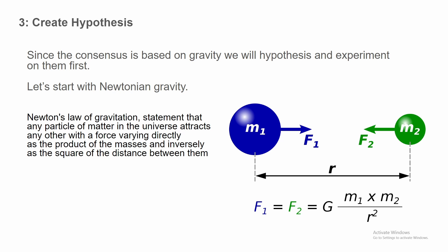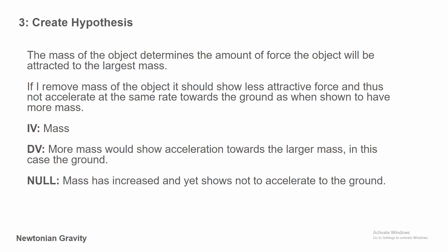Number three: We create the hypothesis. Since the consensus is based on gravity, we will hypothesize and experiment on them first. Let's start with Newtonian gravity. Newton's law of gravitation states that any particle of matter in the universe attracts any other with a force varying directly as a product of the masses and inversely at the square of the distance between them. So in other words, the larger mass will attract the smaller mass more, and the distance between them would give them a different accelerative rate. Create a hypothesis: The mass of an object determines the amount of force the object will be attracted to the largest mass. If I remove the mass, it should show less attractive force and thus not accelerate at the same rate towards the ground as when shown to have more mass.